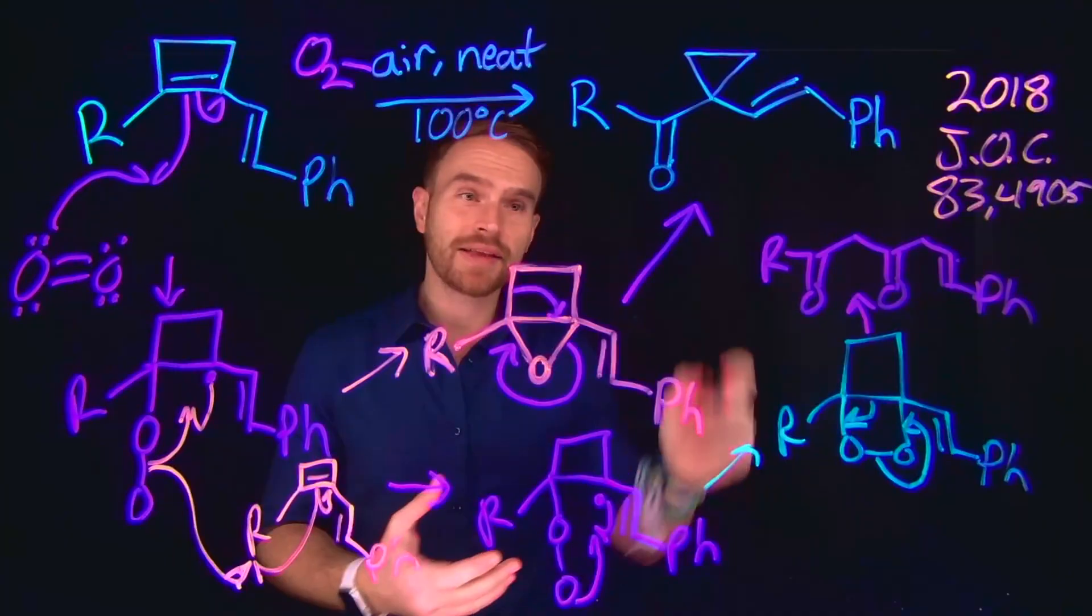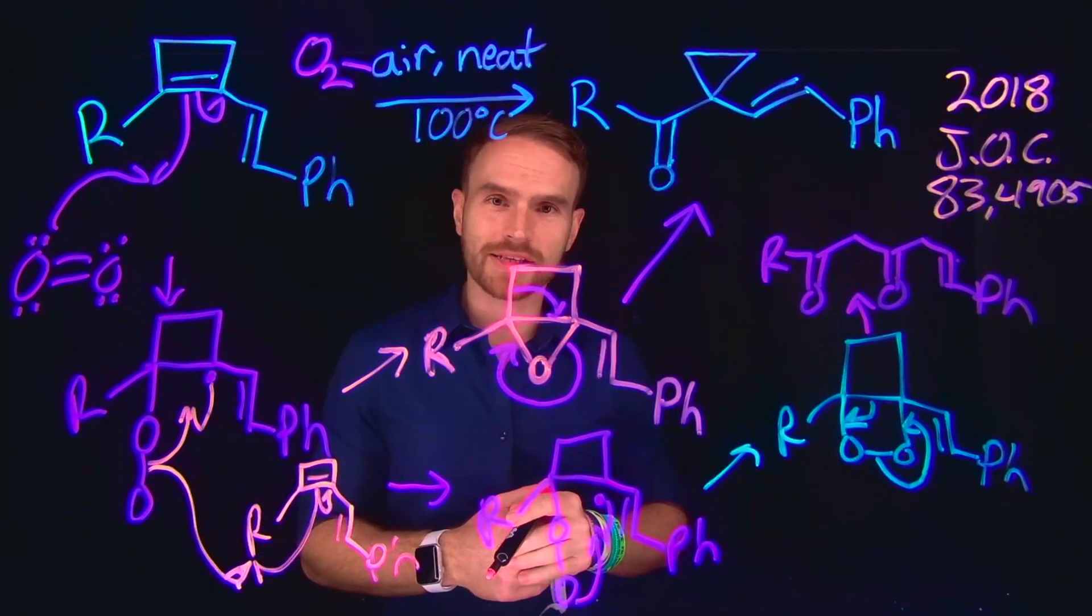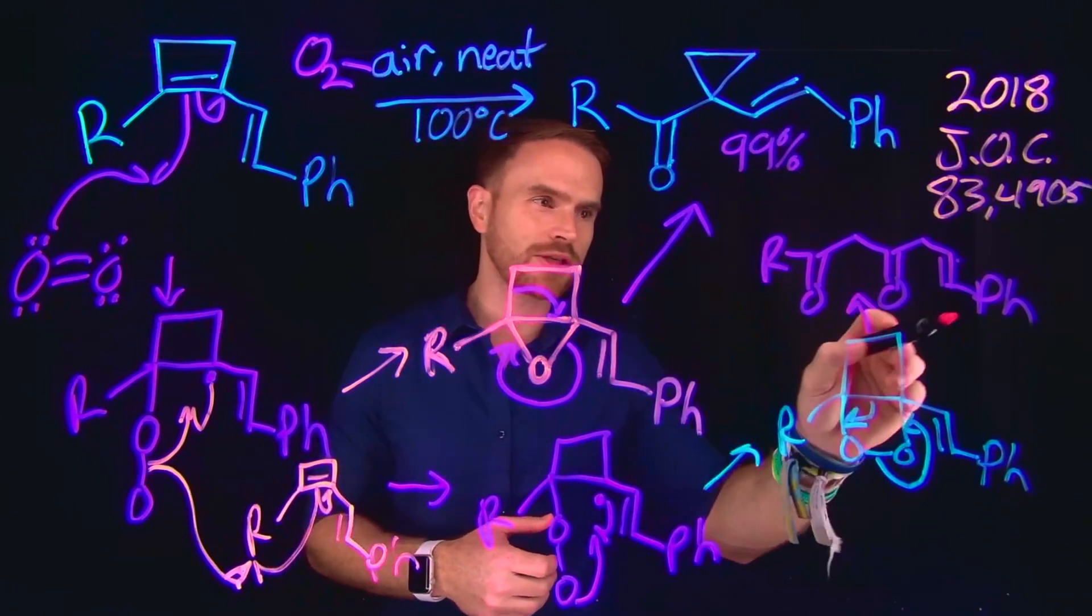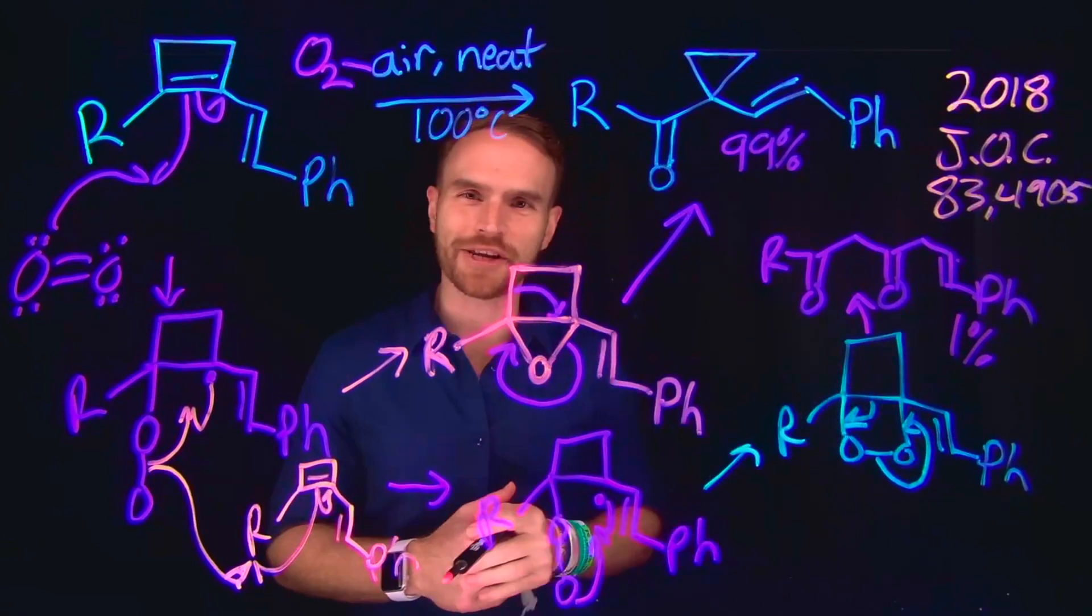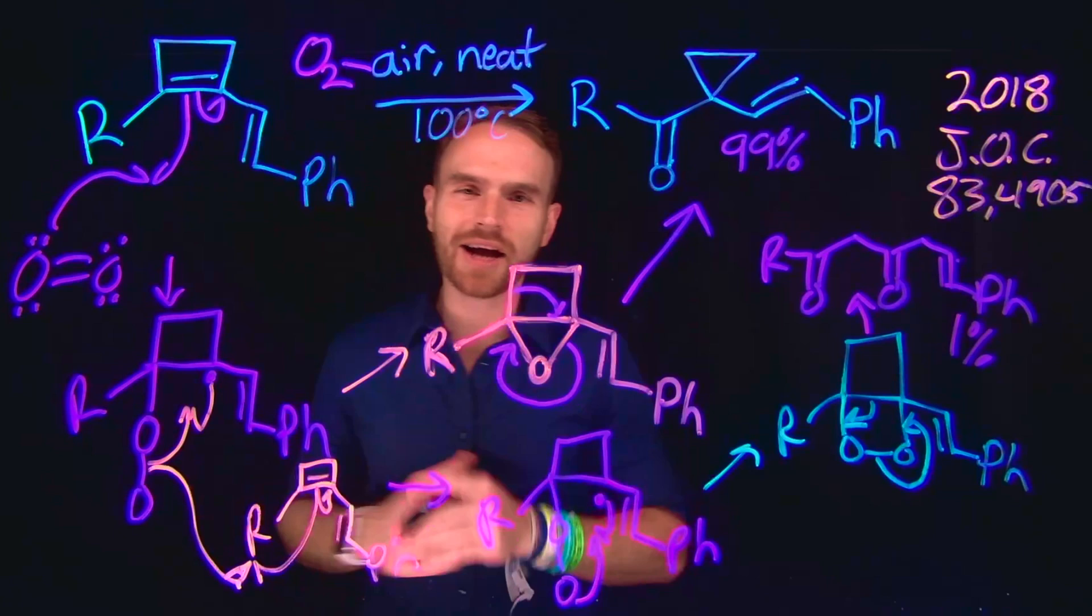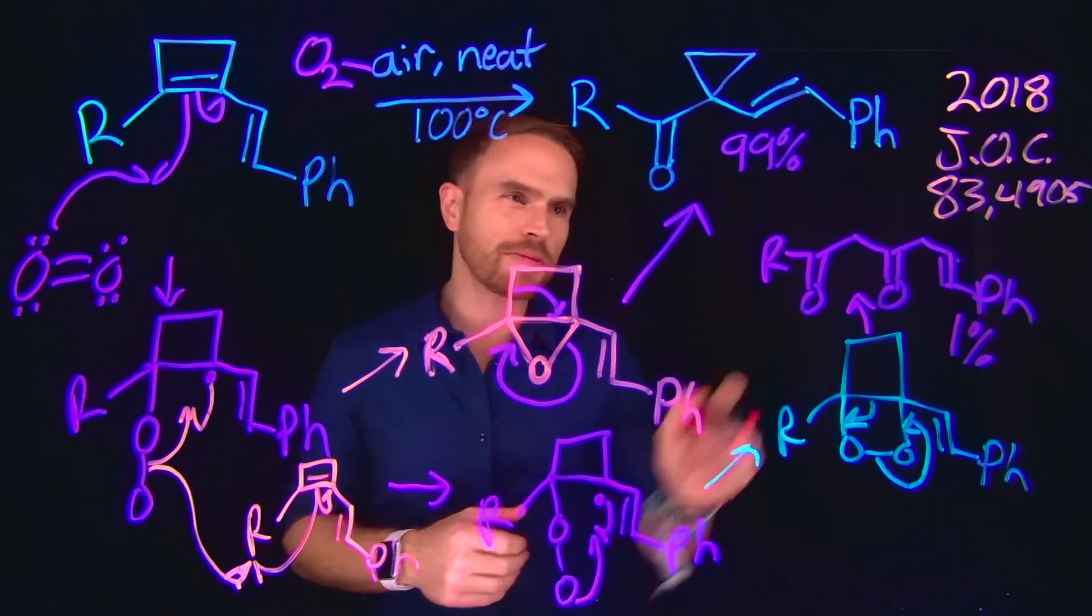So now importantly, both of these products are made in this transformation. However, this one is made at about 99% abundance, whereas this one is only made in about 1% abundance. But still, I think this is a pretty cool transformation, running neat with just oxygen at high elevated temperatures to make two different products.